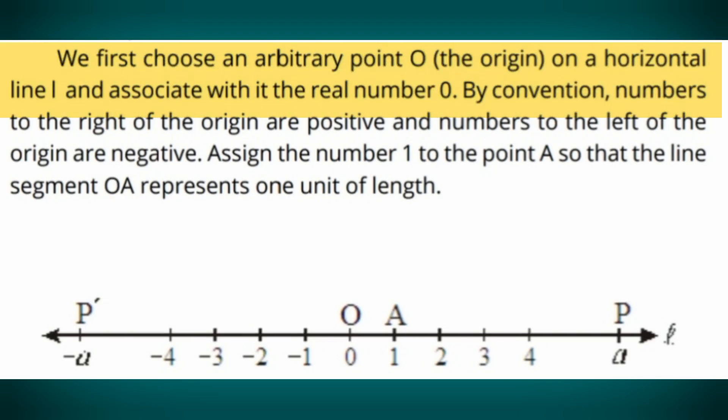We first choose an arbitrary point O, the origin, on a horizontal line L and associate with it the real number zero. By convention, numbers to the right of the origin are positive and numbers to the left of the origin are negative. Assign the number one to the point A so that the line segment OA represents one unit of length.